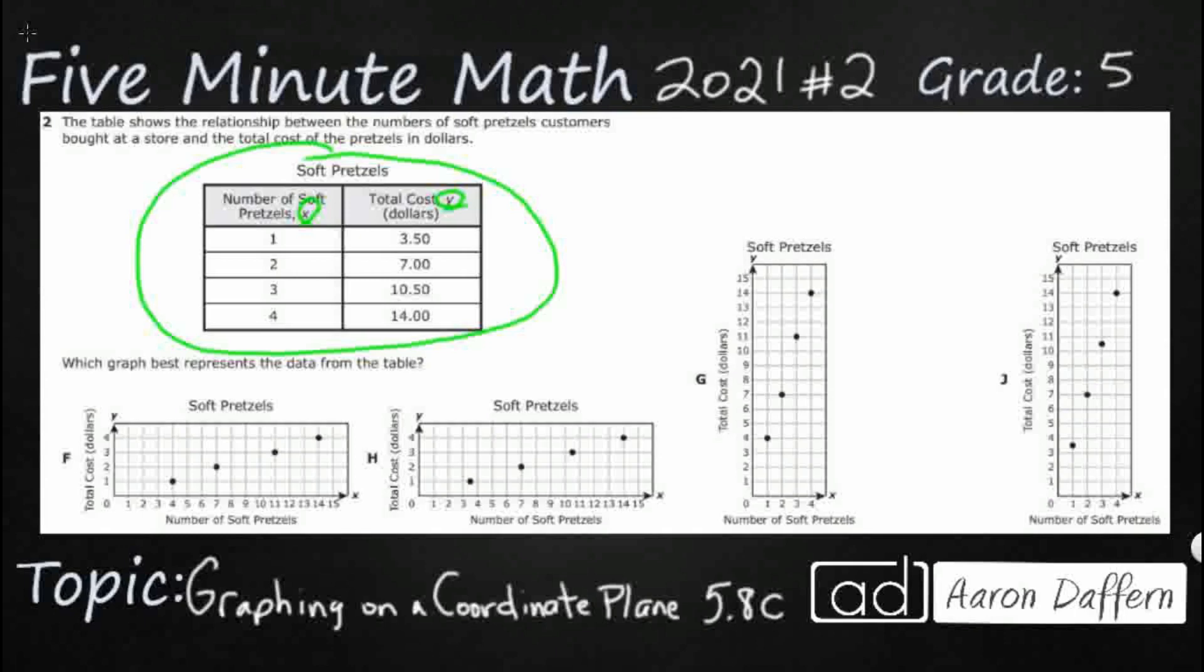So take a look at x. Our x is going to be the number of soft pretzels. Our x coordinate is always going to be the horizontal axis. It goes side to side. So we've got number of soft pretzels on all these x axes.